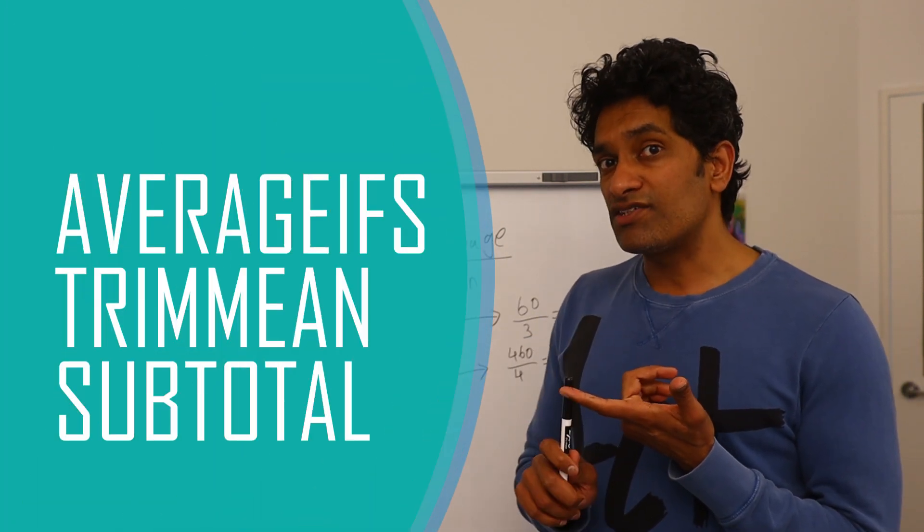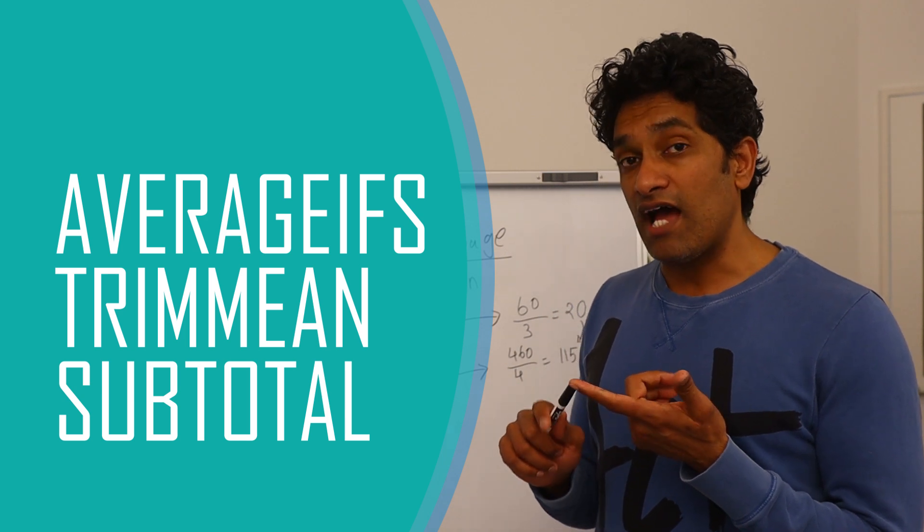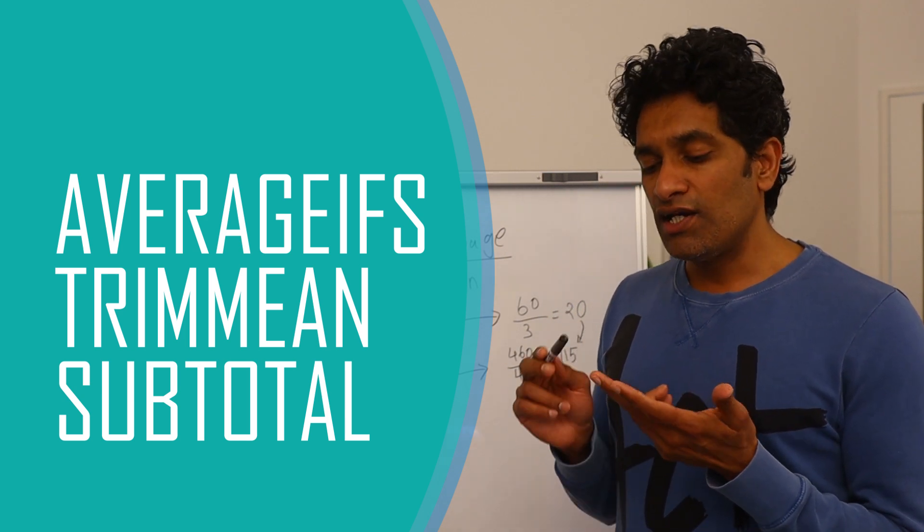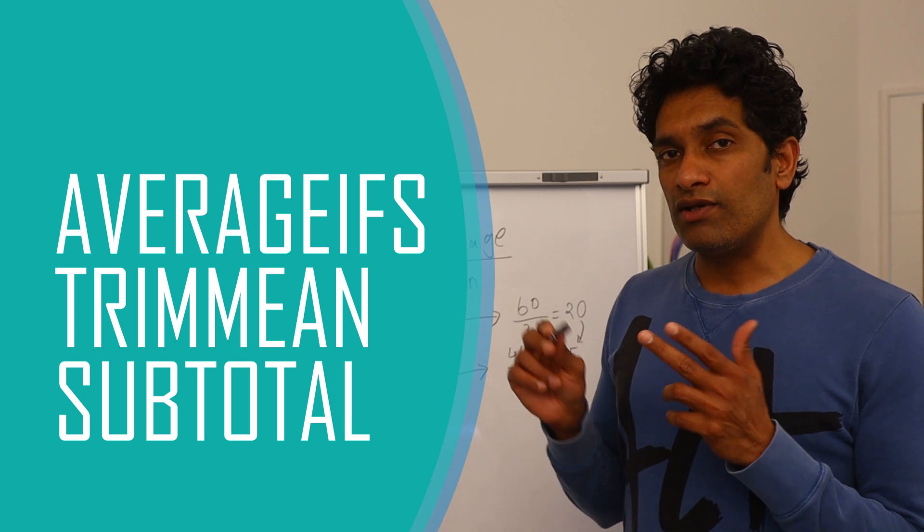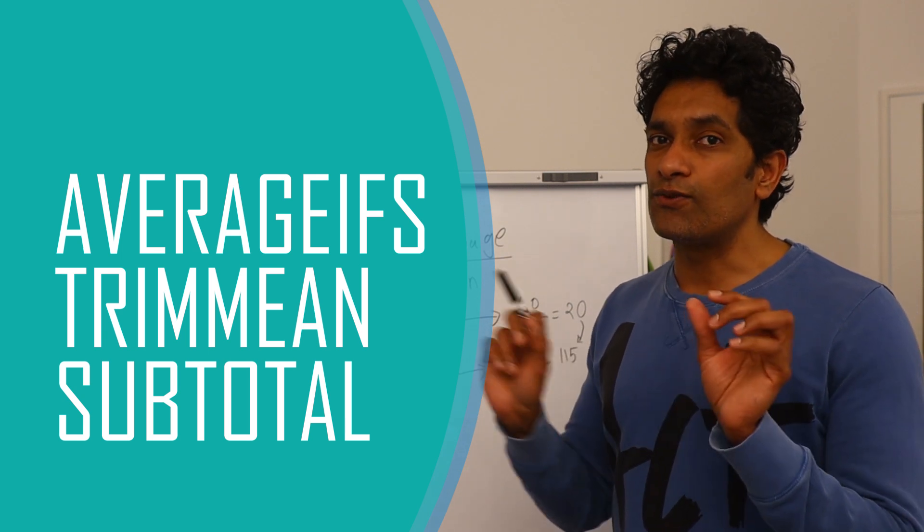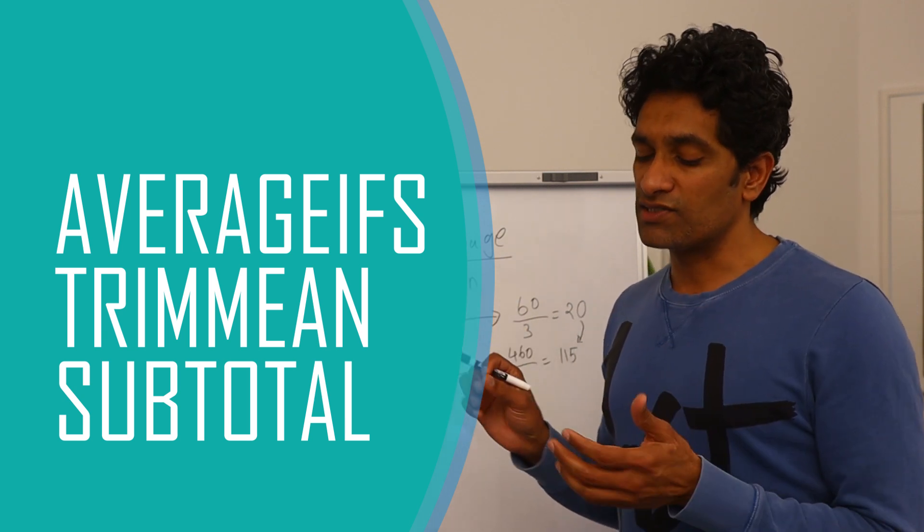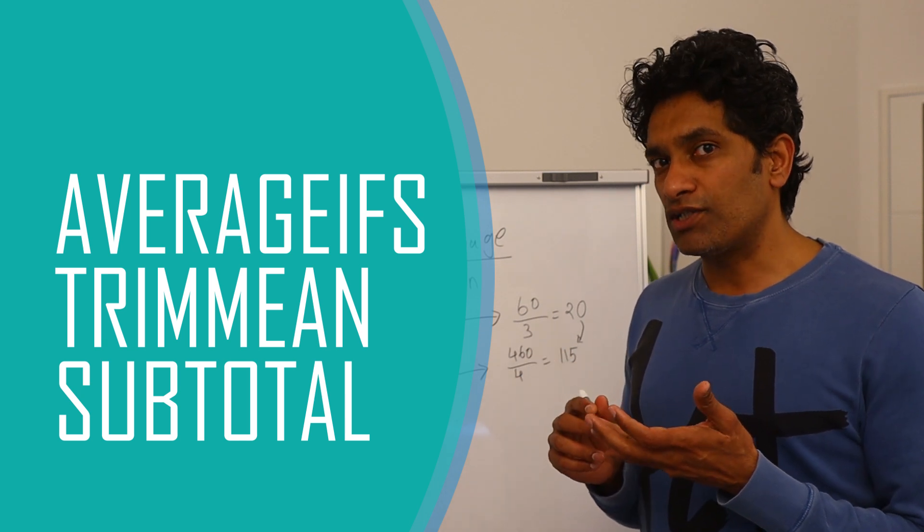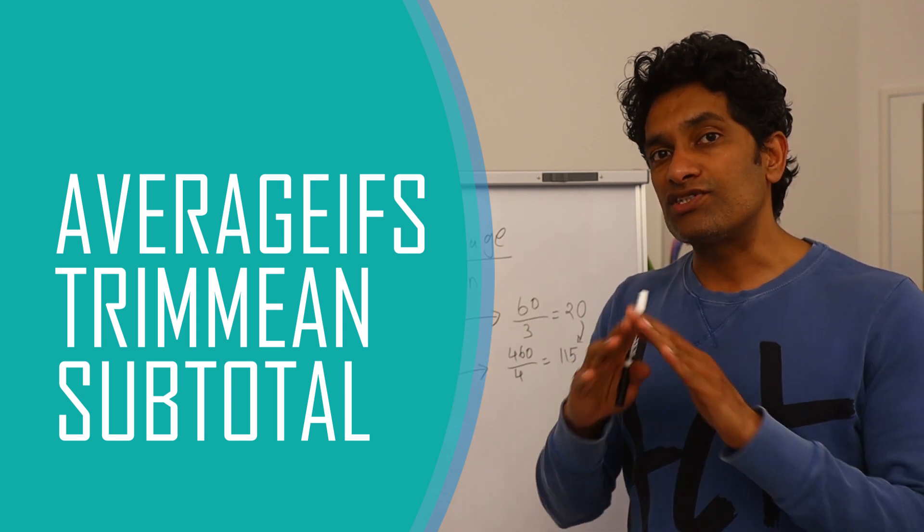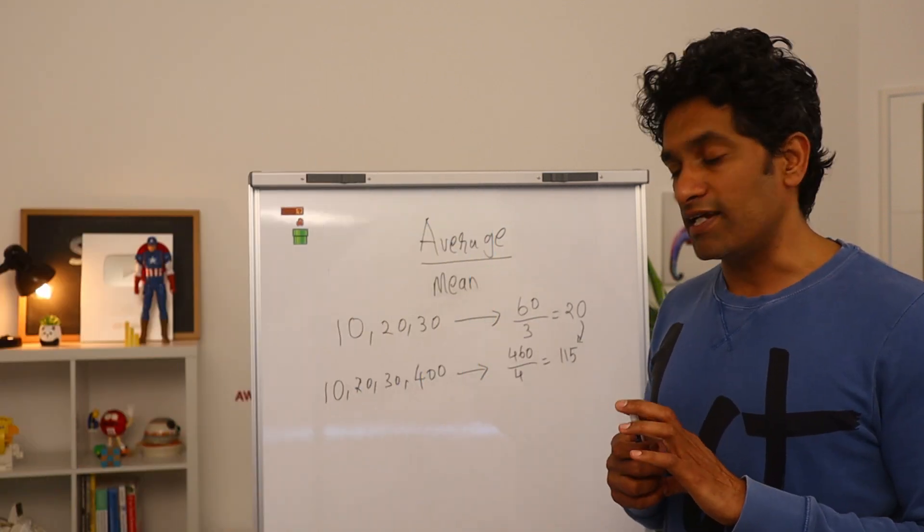Starting with average ifs, which can be used to calculate average based on conditions. We have got trim mean to calculate average by excluding top and bottom values. And then we also have subtotal to calculate average for the values that are currently filtered on the screen.